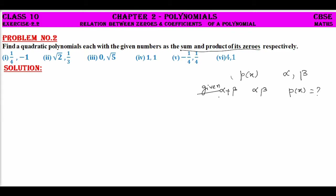In such cases, that is when alpha plus beta and alpha into beta are given — that is sum and product of the zeros are given — we can write the required polynomial as X square. It's a quadratic polynomial. The quadratic polynomial will be of the form X square minus (sum of the roots) X plus (product of the roots), that is alpha into beta. So this is the required form I am going to use in each of the cases.